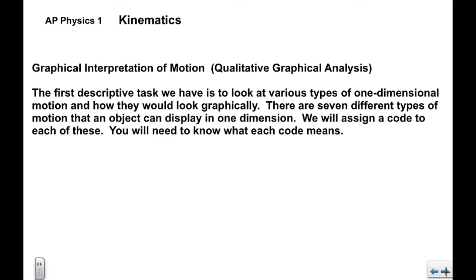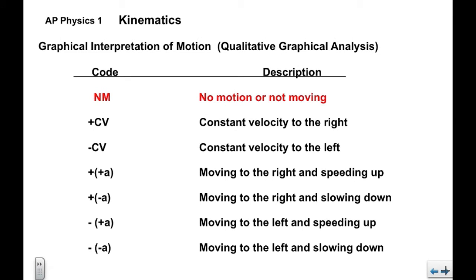There are seven different types of motion that an object can display in one dimension. We're going to assign a code to each one, and you will need to know what each code means. First we have NM: no motion or not moving. We have +CV: constant velocity to the right; -CV: constant velocity to the left; ++A: moving to the right and speeding up; +-A: moving to the right and slowing down; -+A: moving to the left and speeding up; and --A: moving to the left and slowing down.